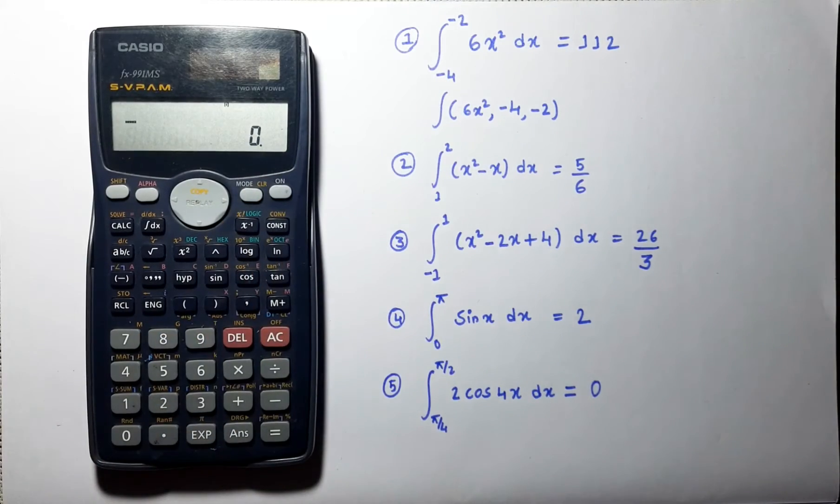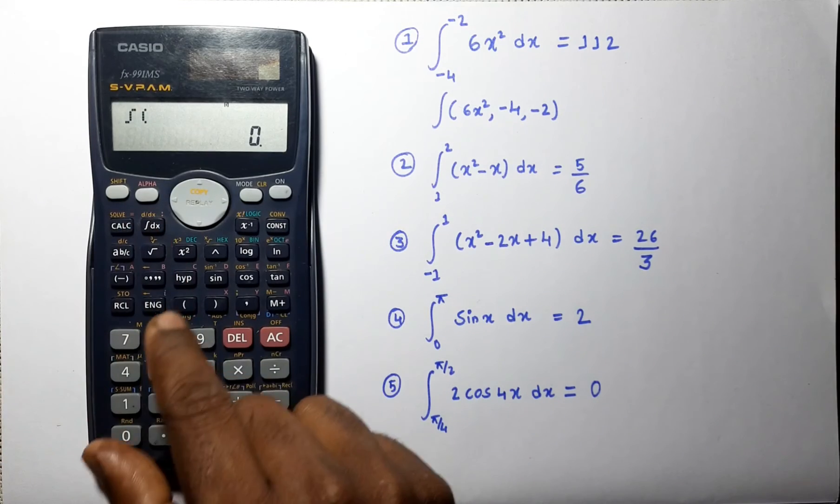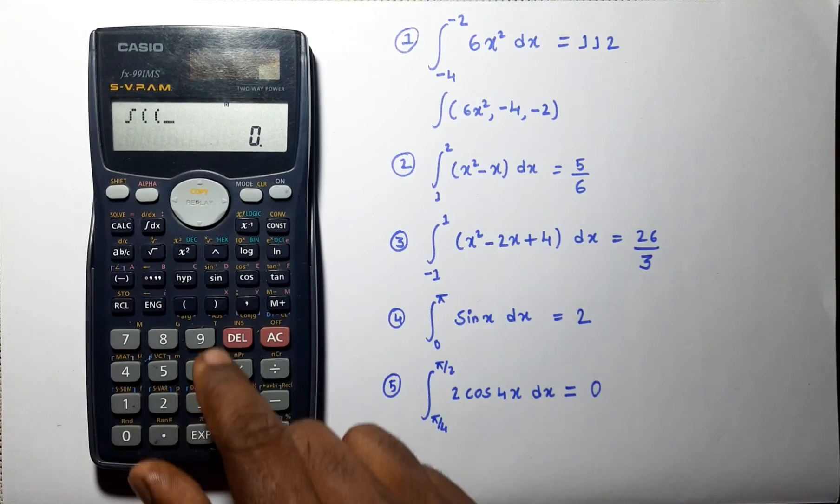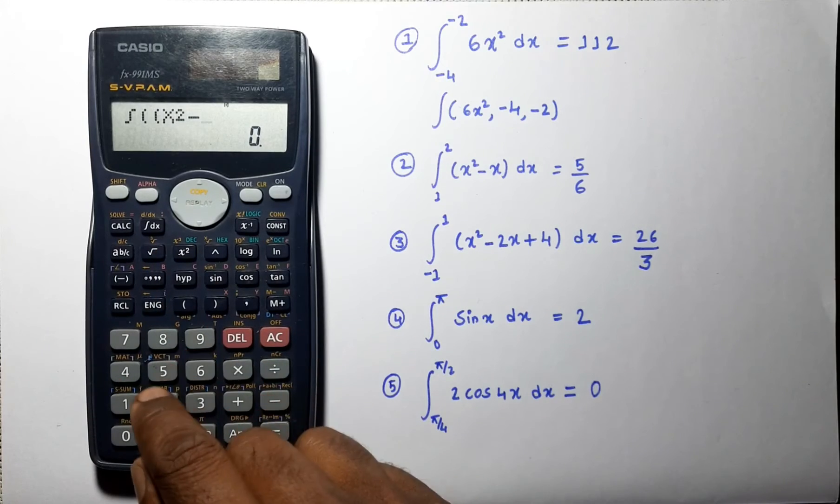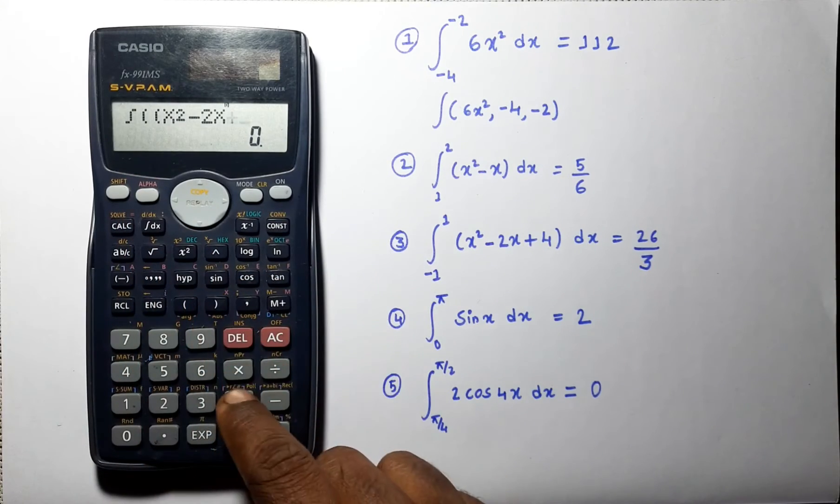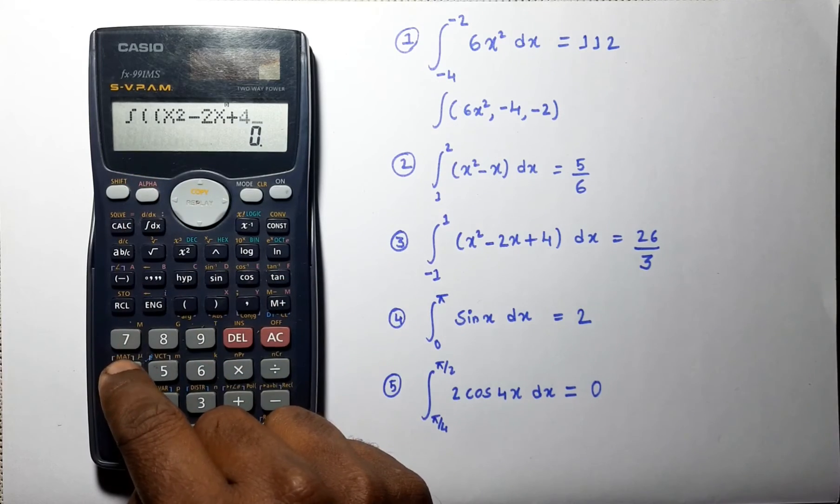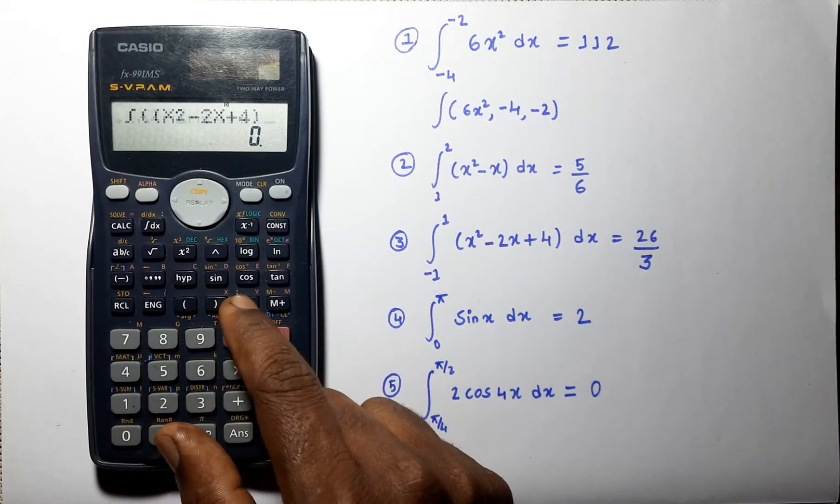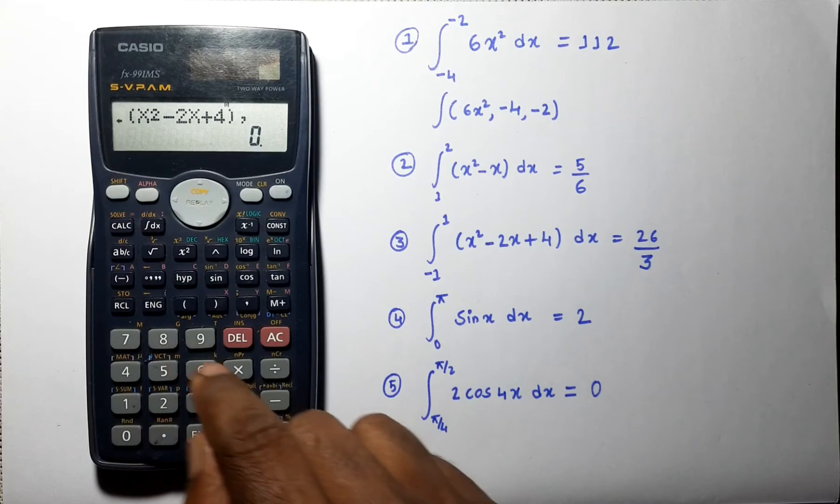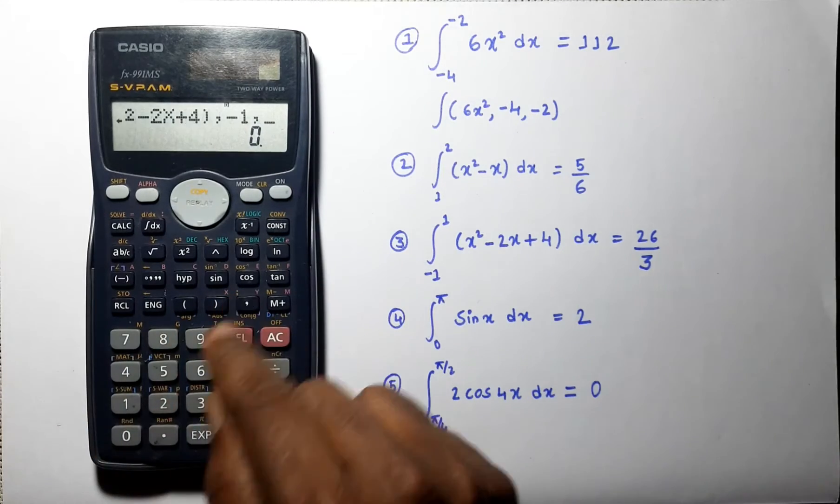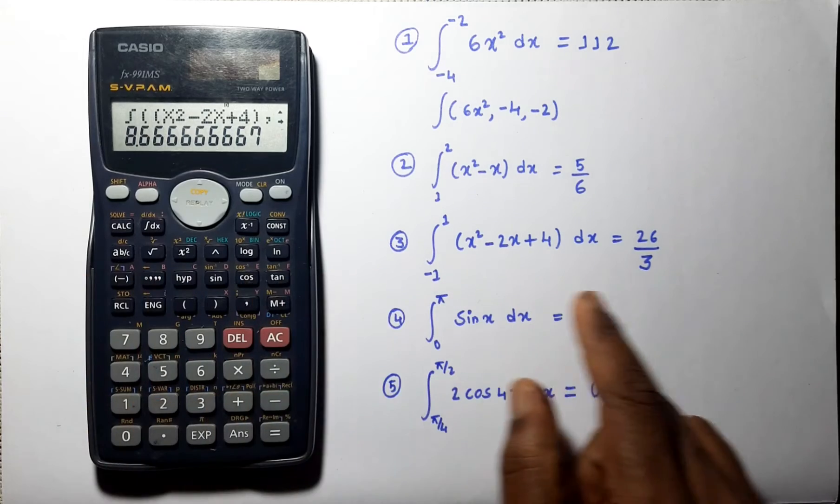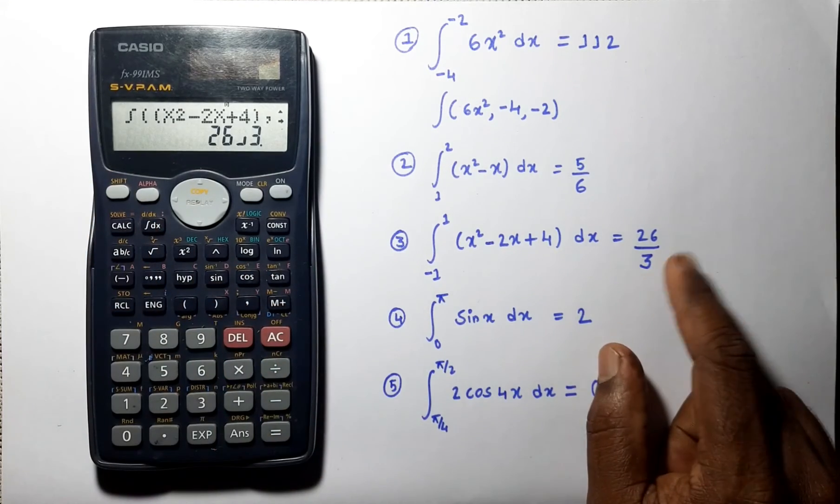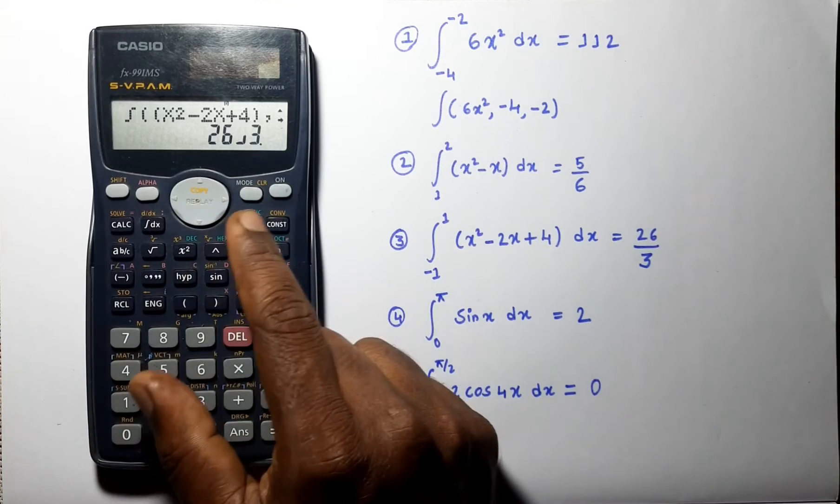Now, let us solve next problem. Integral of x square minus 2x plus 4. And the limit varies from minus 1 to 1. Again, you can check this answer by converting it into fractions.